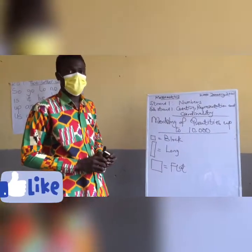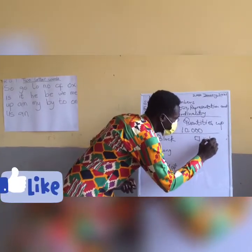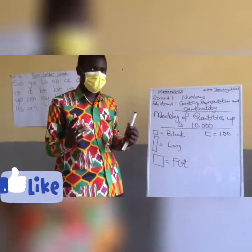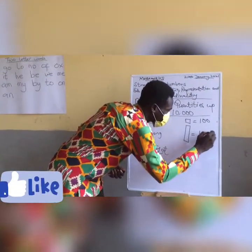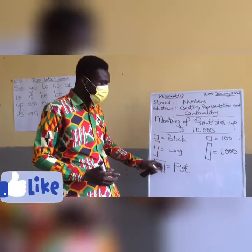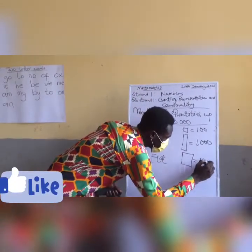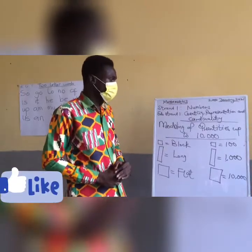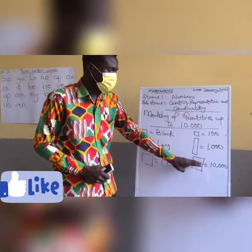In the modeling of quantities, this block is equivalent to 100. So one block is 100. One long is equivalent to 1,000. And one flat is equivalent to 10,000. That is why we are modeling numbers up to 10,000. So: one block is 100, one long is 1,000, and one flat is 10,000.